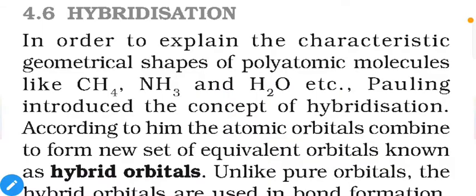To explain the characteristic geometrical shapes of polyatomic molecules like CH₄, NH₃, and H₂O, Pauling introduced the concept of hybridization. According to him, atomic orbitals combine to form a new set of equivalent orbitals known as hybrid orbitals. 'Equivalent' means that initially, in the atomic state, orbitals may have different energies, shapes, and orientations, but during bond formation these orbitals create hybrid orbitals of the same type.